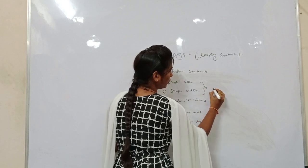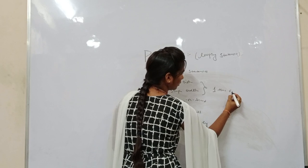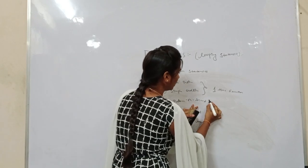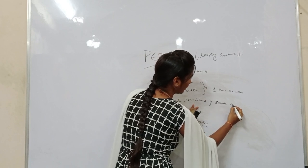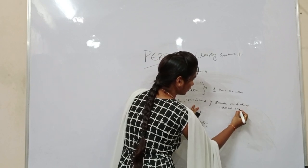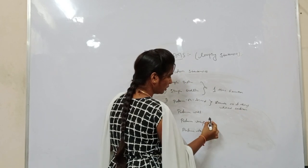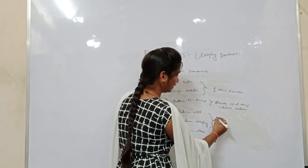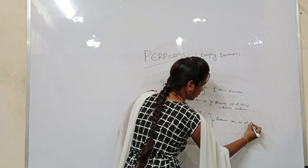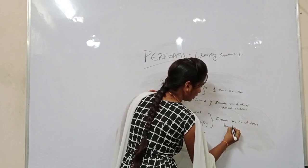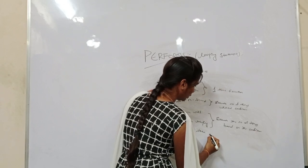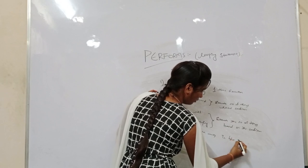In simple inline and simple outline, there is only one-time execution. PERFORM n times executes a number of times without condition. PERFORM UNTIL and PERFORM VARYING execute a number of times with condition, based on the condition. PERFORM THROUGH executes in between paragraphs.